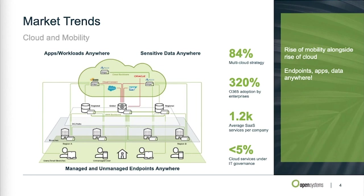Pretty much every enterprise is adopting cloud in one way or another as part of a multi-cloud strategy. Multi-cloud can mean deploying infrastructure in different cloud environments, mixing different types of cloud deployments — SaaS, IaaS, PaaS — or just leveraging multiple services from one provider like Microsoft Azure. There are many ways a multi-cloud strategy can look, but it's present in essentially every company.